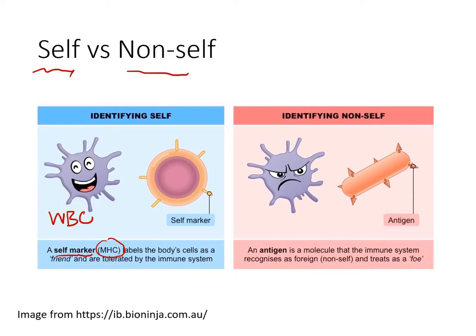Your MHC markers will be different from your parents' MHC markers — similar but not identical. The only time you have identical MHC markers is if you have an identical twin. A similar situation occurs with pathogens: on the surface of a bacterium there are molecules called antigens that tell our white blood cells that the organism does not belong to the body.